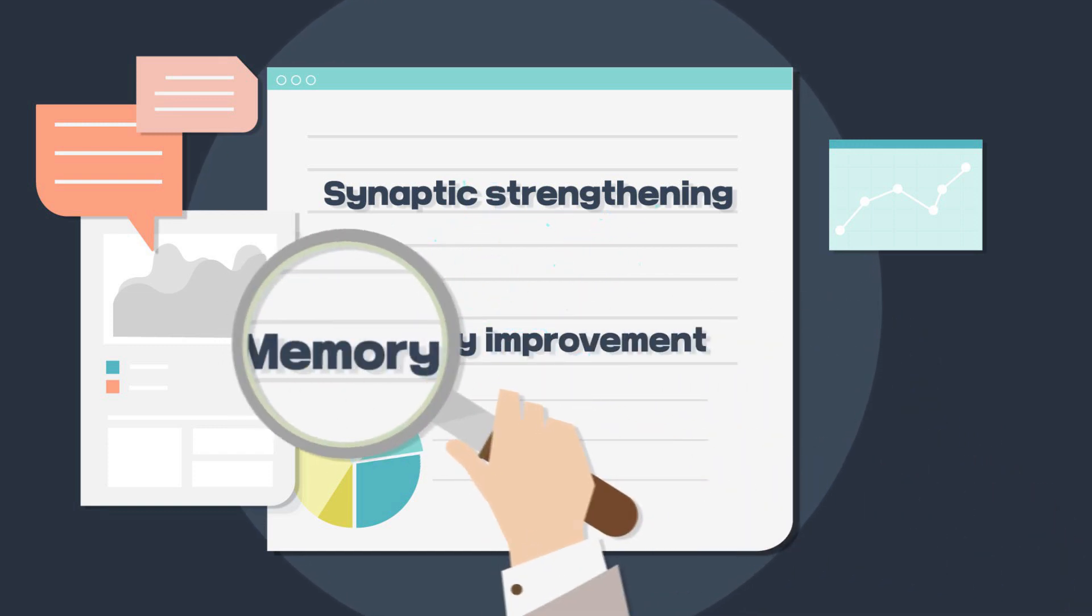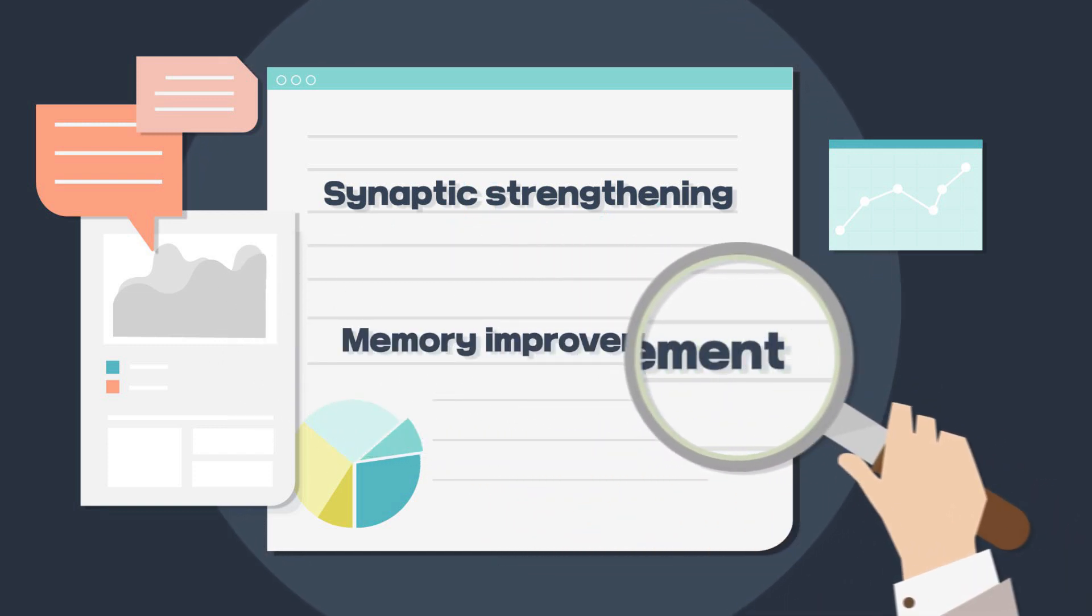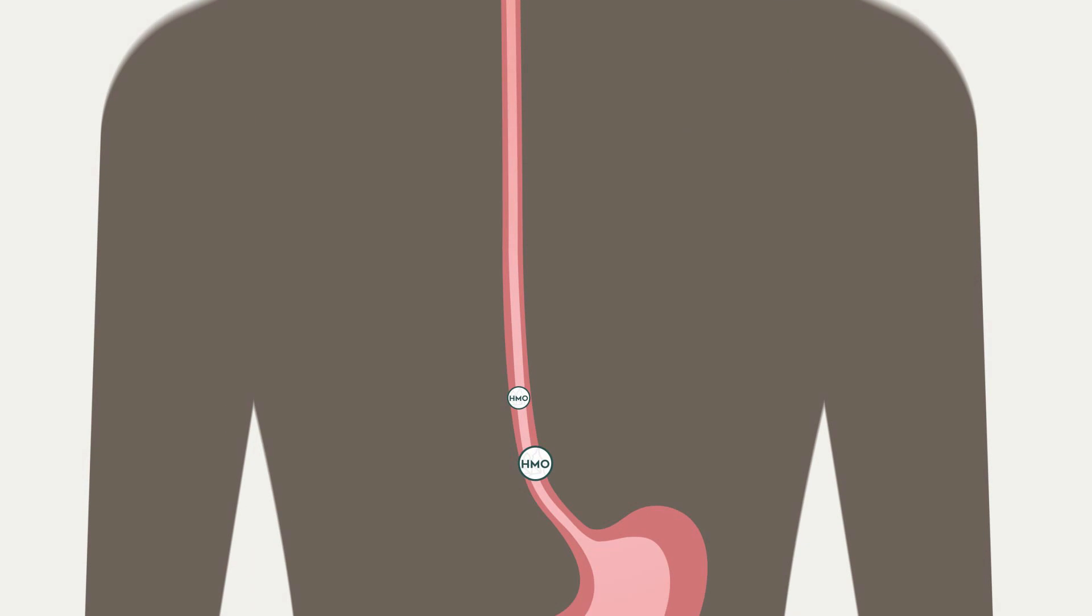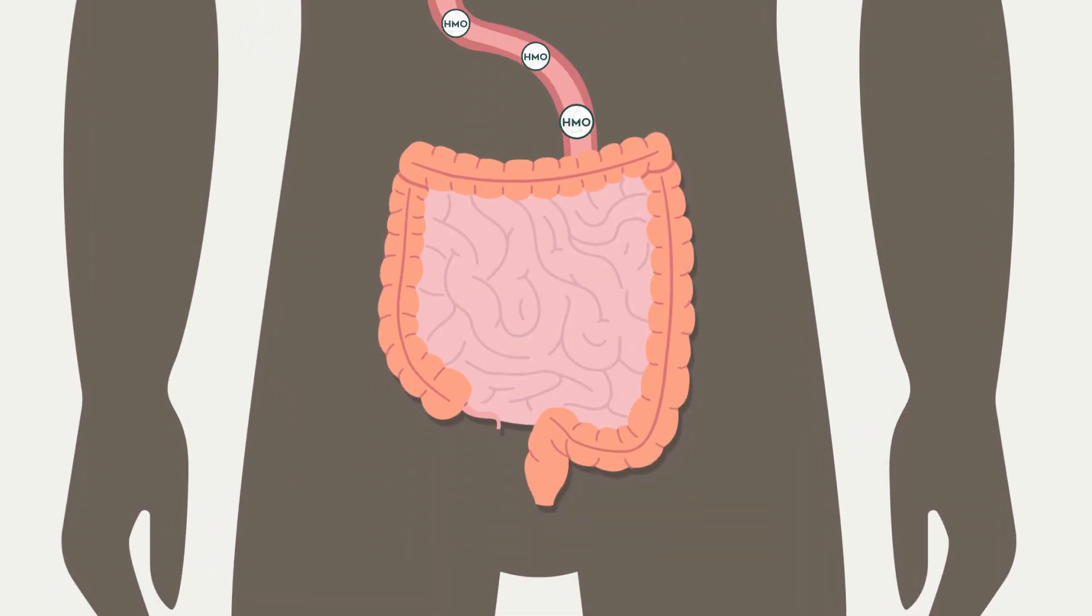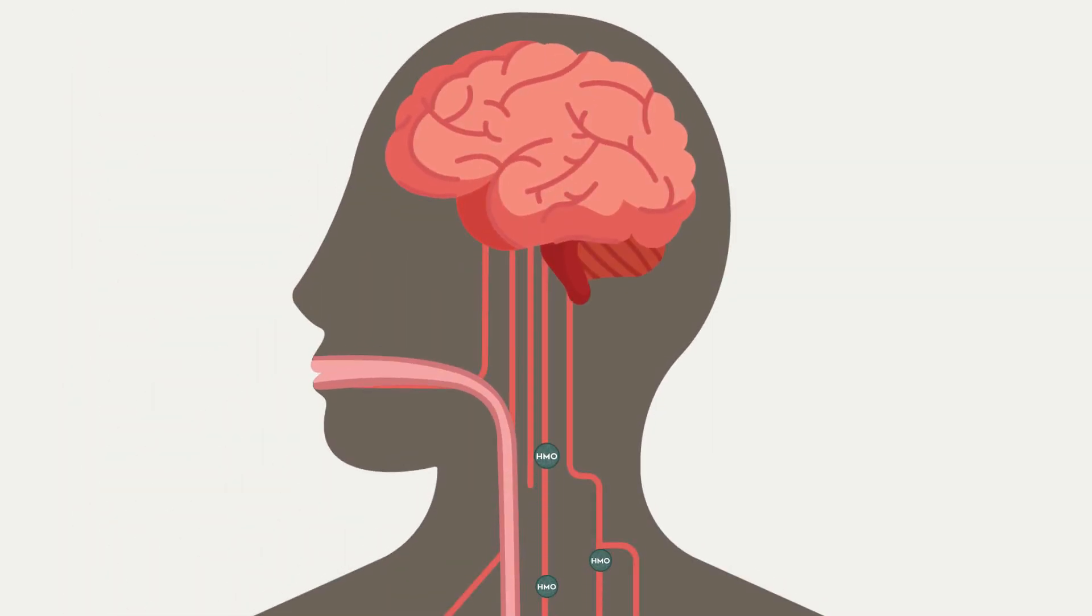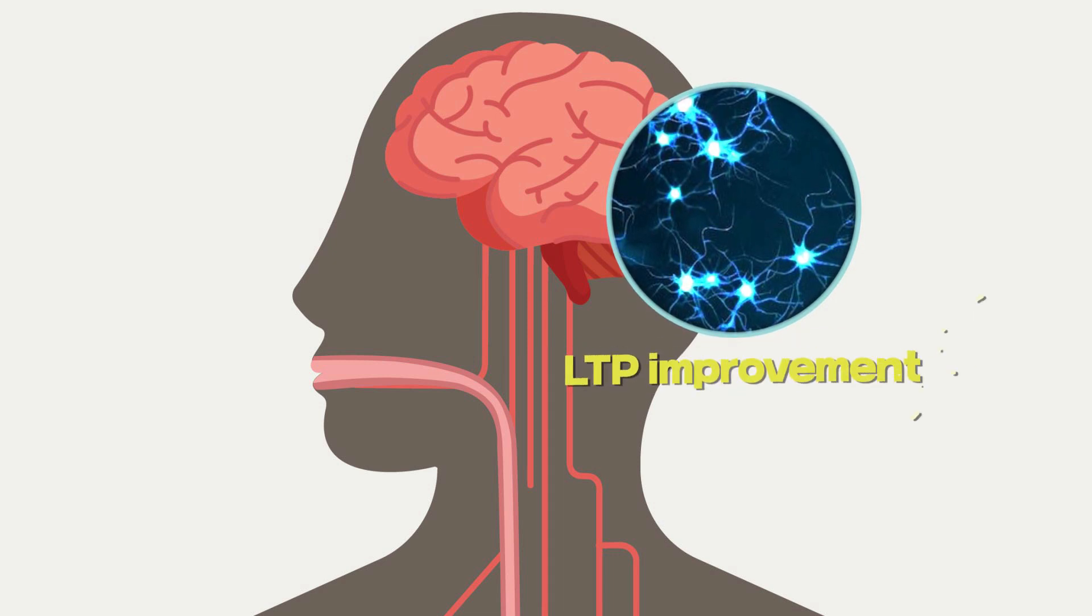There are many research papers supporting the fact that HMO helps improve memory. Apparently, HMOs ingested go through blood circulation, stimulating the synapses in the brain.